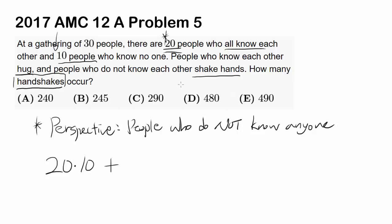And they have to handshake each other. So to handshake each other, we want to find a way to choose 2 people out of 10 people or 10 choose 2. This gets us 200 plus 10 times 9 over 2, which is 45. So the answer is 245 or B.